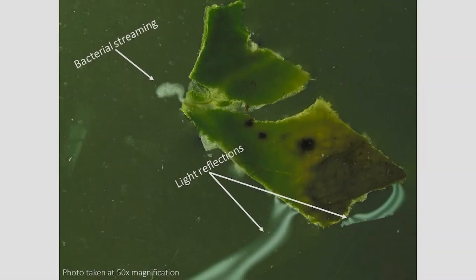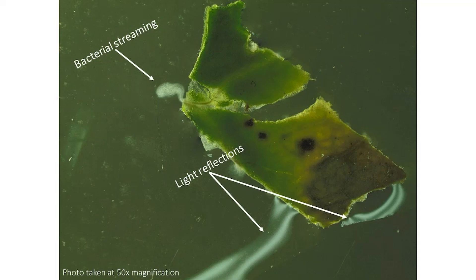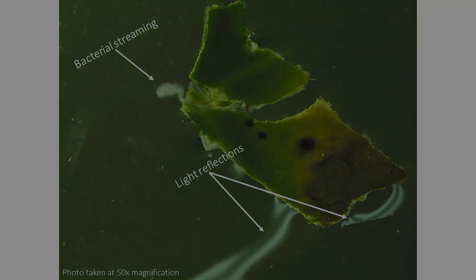If you have access to a stereoscope or microscope, you may be able to visualize bacterial streaming. When you cut small leaf pieces that span the lesion and put them in a drop or two of water, after a few minutes you will see a white, milky ooze coming out of the affected tissue, and this will confirm that you have a bacterial disease as opposed to a fungal disease.